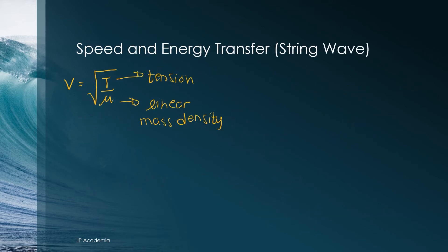Now let us have a quick discussion of the speed and energy transfer for the case of a wave on a string. Given a string tension t and mass per unit length, also called as the linear mass density mu, the wave velocity is expressed as v is equal to the square root of t over mu. That's quite simple.